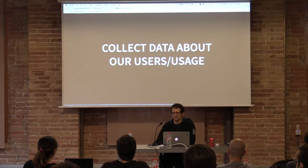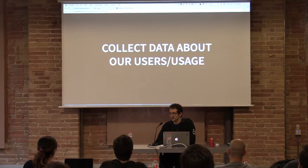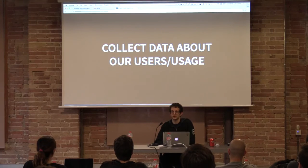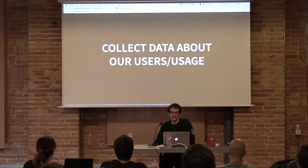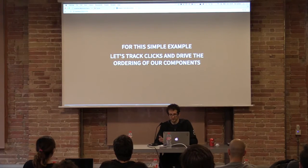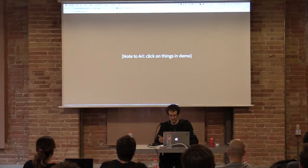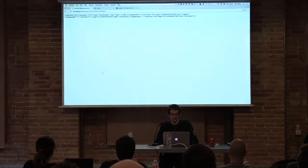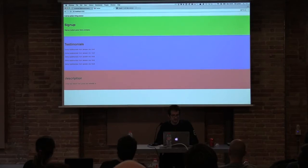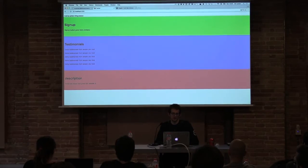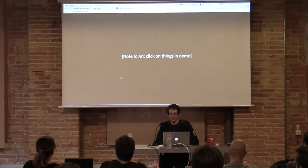Before we can call ourselves done, we want the experiment to take care of collecting data about users and the usage of the page. We want our components to maybe track scrolling. Maybe when our component renders, we want to track how often this component renders — there's some correlation between that and how often somebody signs up and puts their email in. For the simple example, we're going to track those clicks and allow this to determine what order our application renders in. When you render a page, it would be really odd if the boxes just started moving, so it's static on load. However, when we come back to it, we'll see it's no longer static.